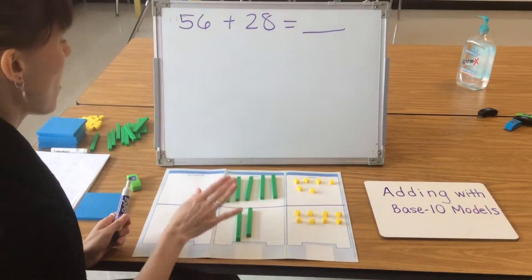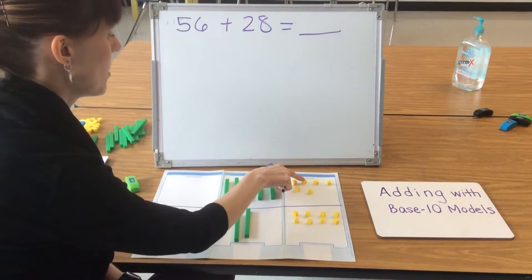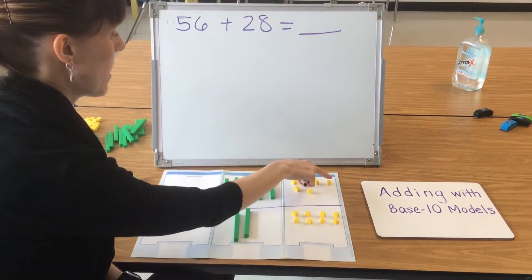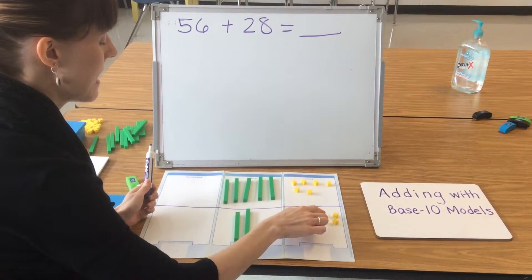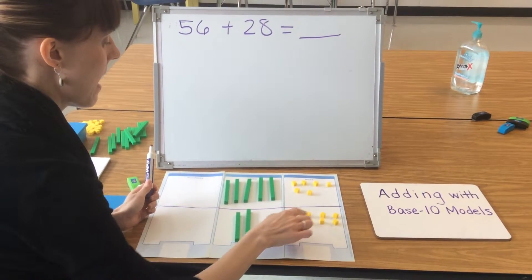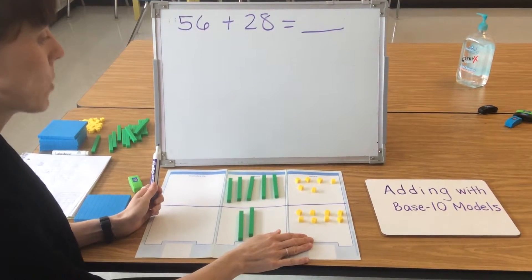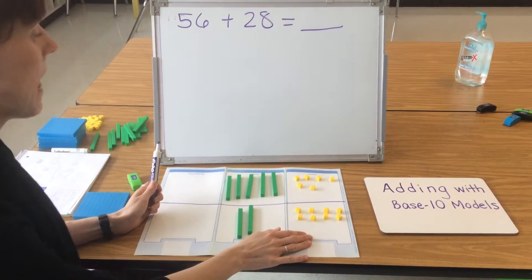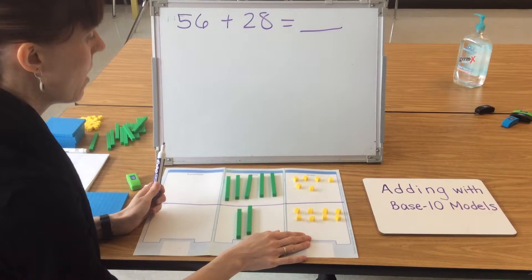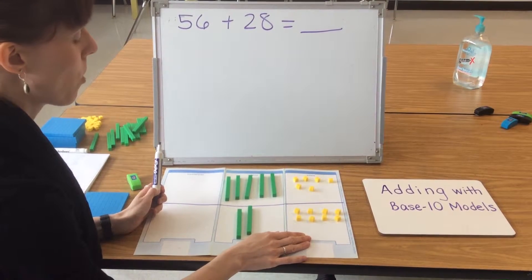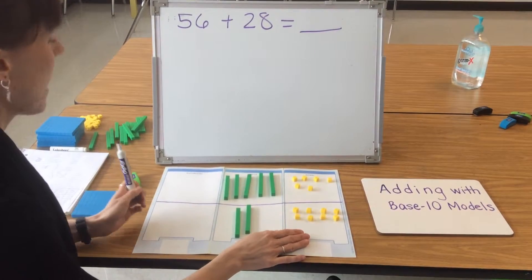After I have modeled both quantities, I'm ready to start counting my 1s: 1, 2, 3, 4, 5, 6, 7, 8, 9, 10, 11, 12, 13, 14 ones. I have 14 ones. That means I need to compose a 10. When you have 10 or more ones, you need to put 10 ones together to make a new 10.